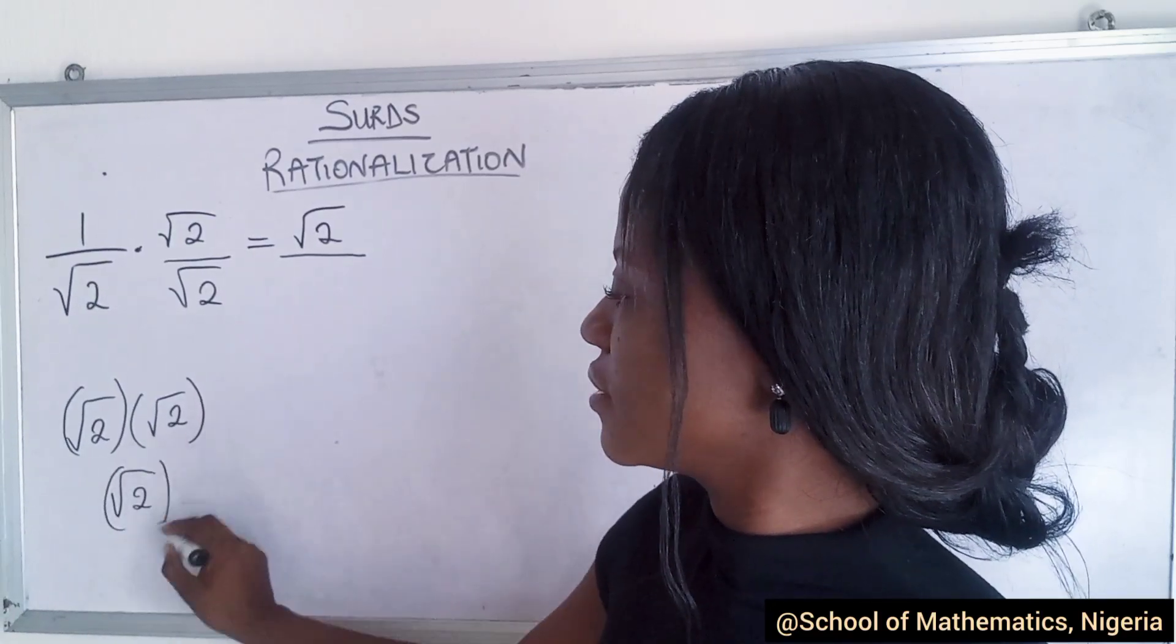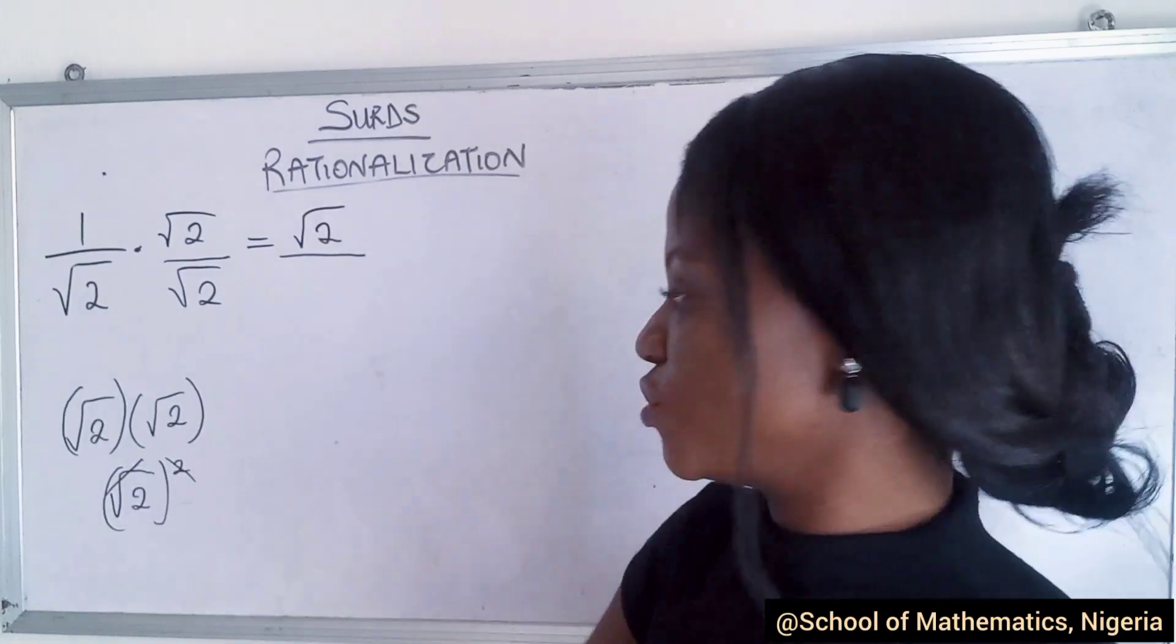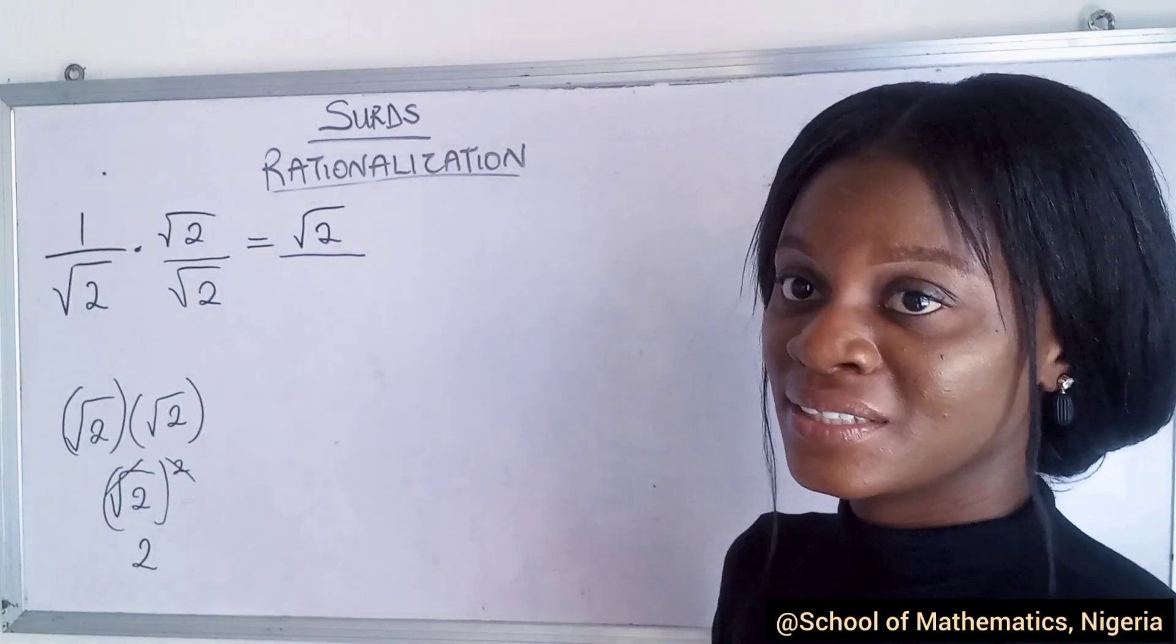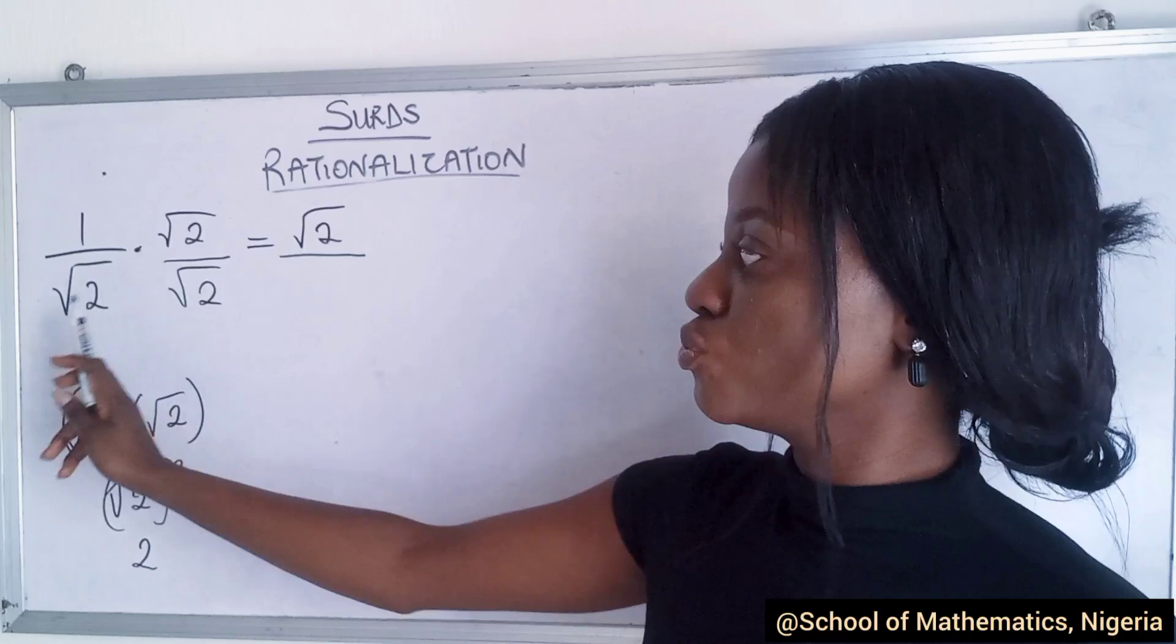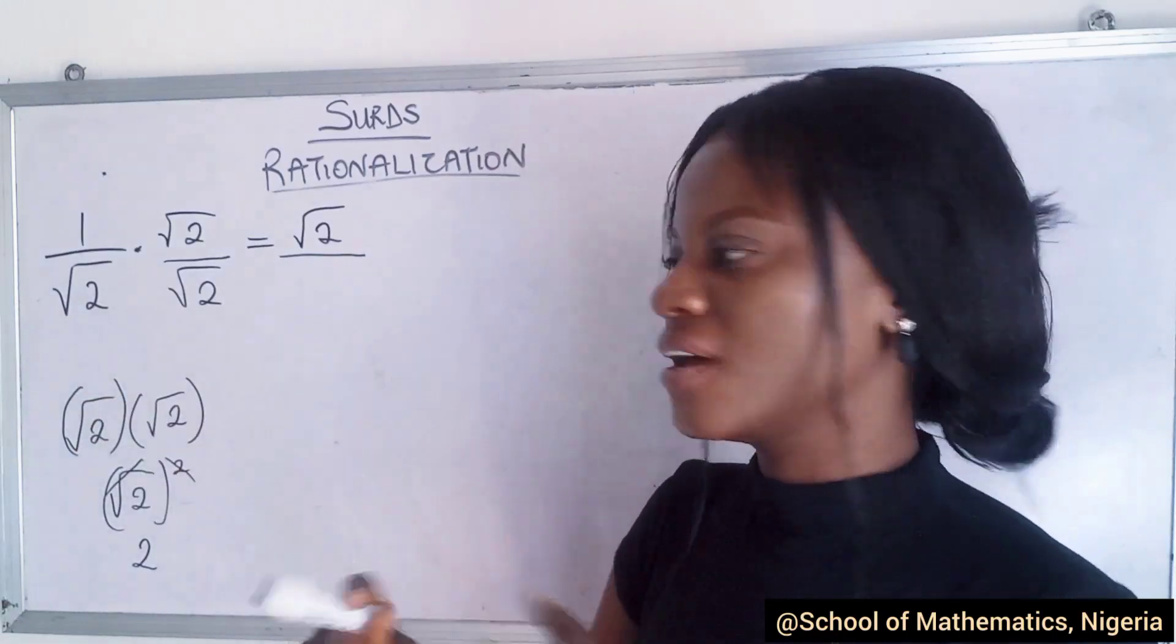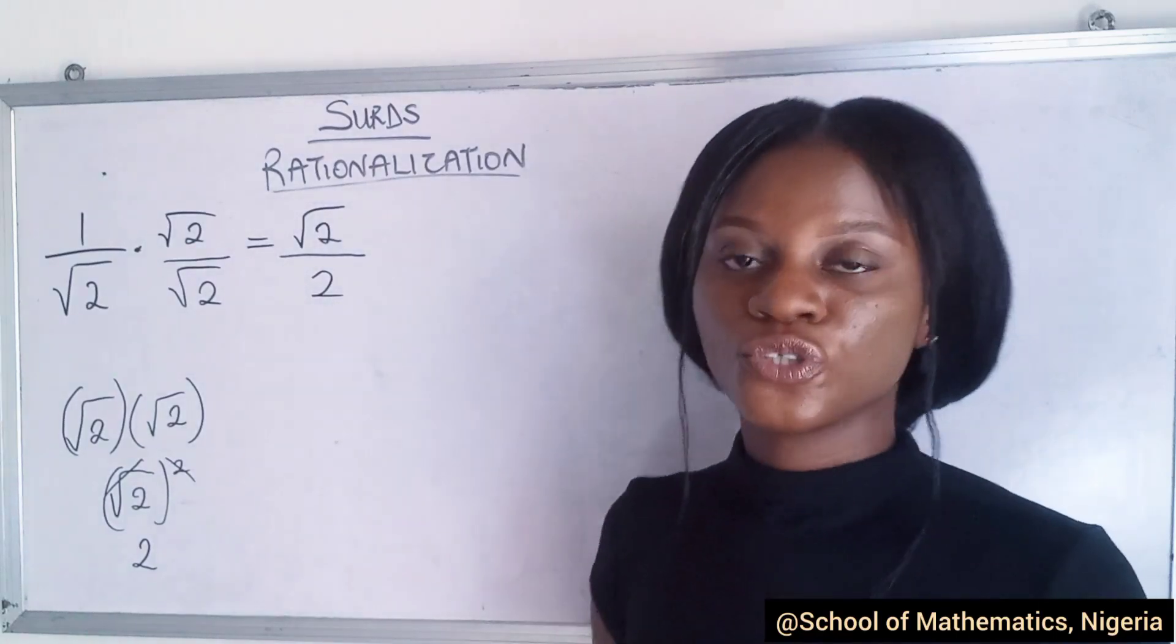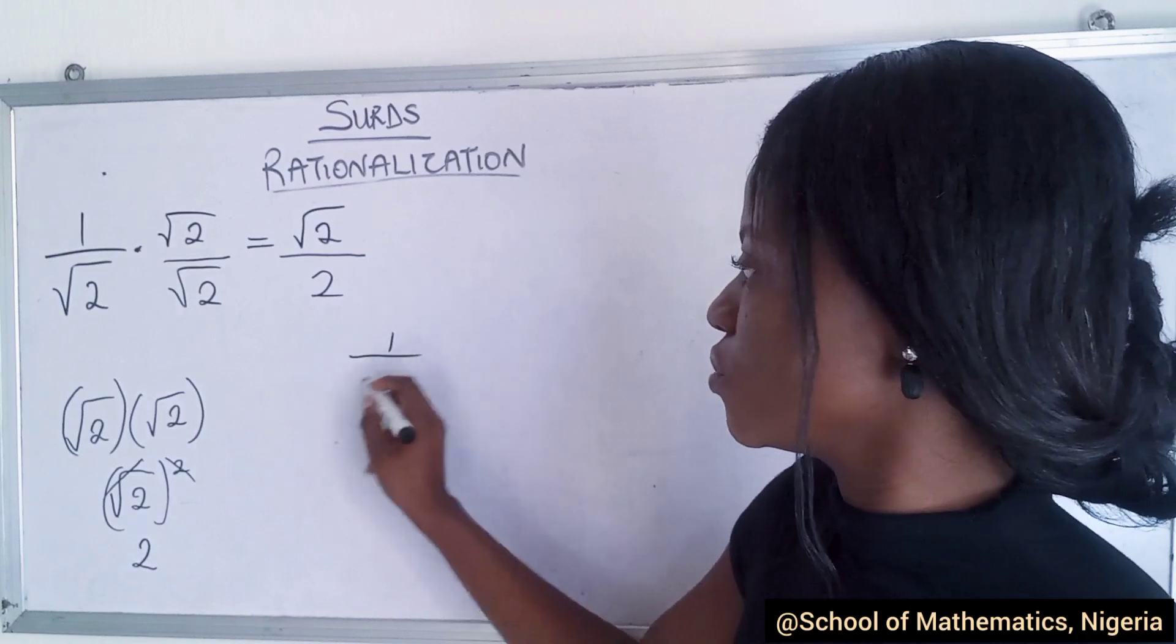It becomes the square of this, because it appears twice, and then the square cancels the square root so you are left with just the value in it. Know that whenever you have anything like this in mathematics, when you have the same value with the square root, when you multiply them together, the square cancels the square root, so we are left with just this.